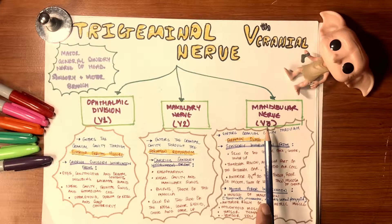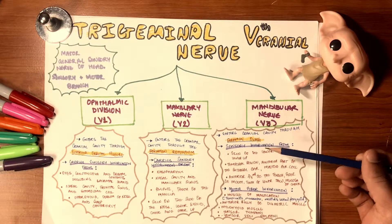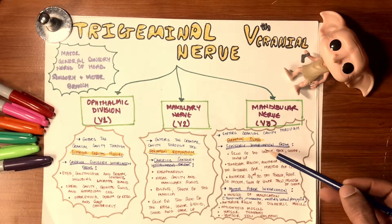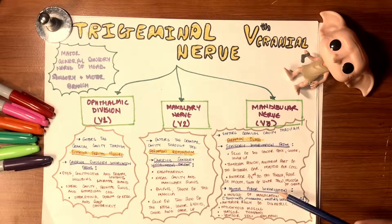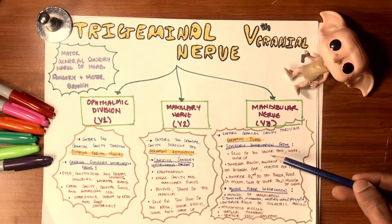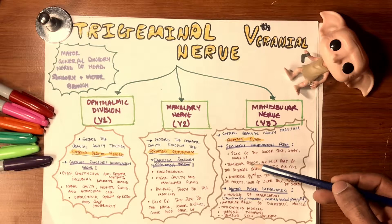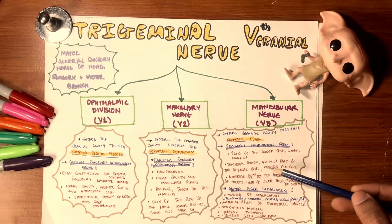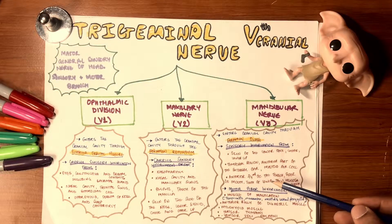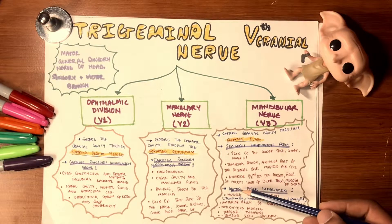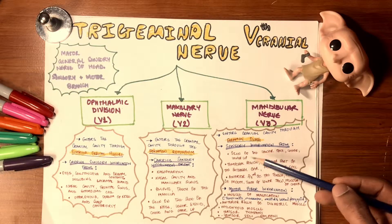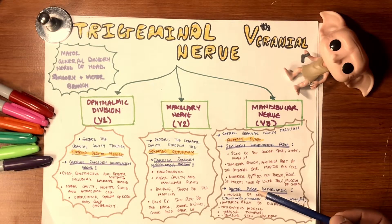The mandibular nerve — the third division — enters the cranial cavity through foramen ovale. It is mixed, carrying both sensory and motor innervations. Sensory innervations include: skin of the lower face, cheek, lower lip, temporal region, anterior part of the external ear, mastoid air cells, anterior two-thirds of the tongue, floor of the mouth, teeth of the lower jaw, and mucosa of the cheeks.